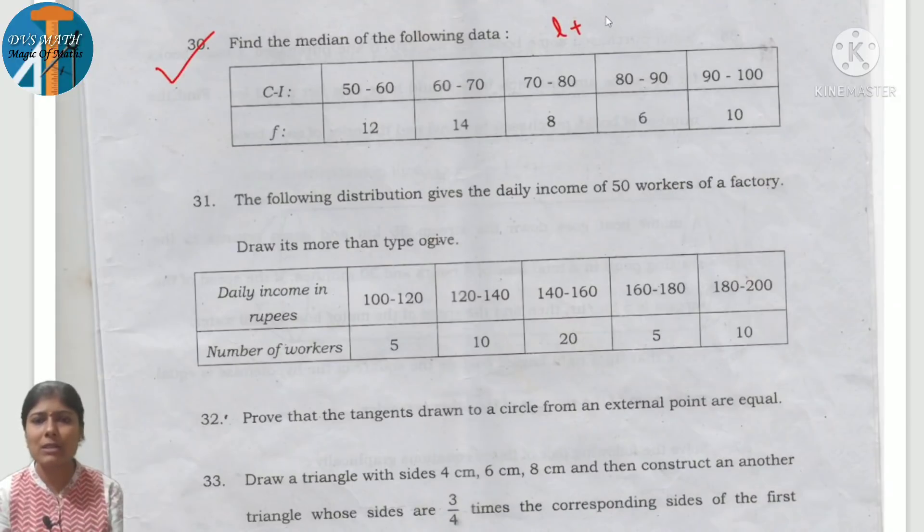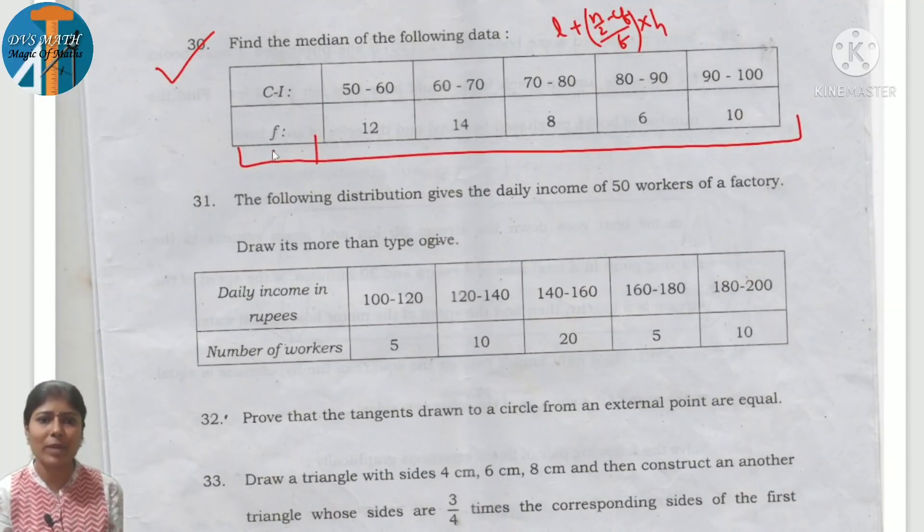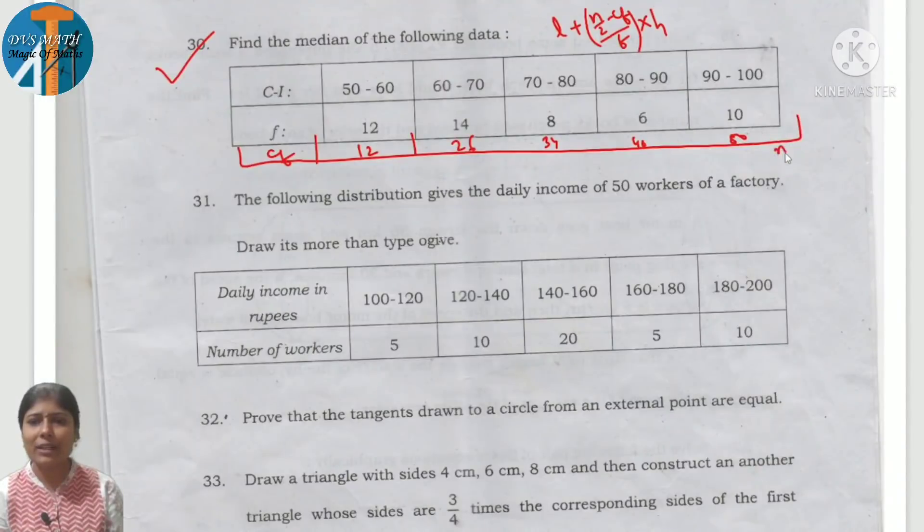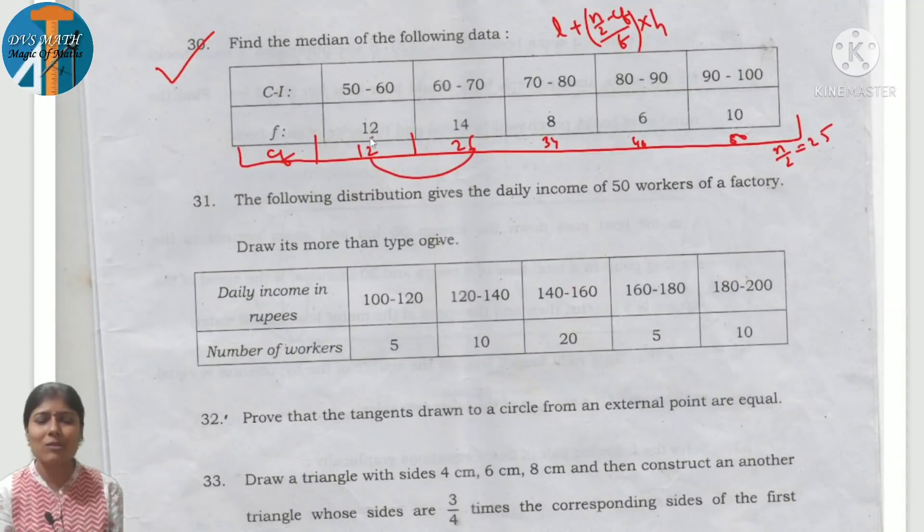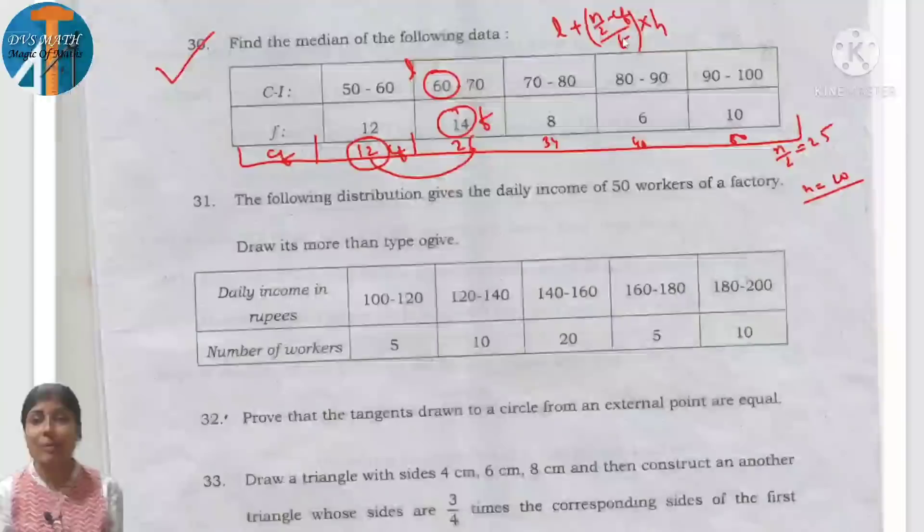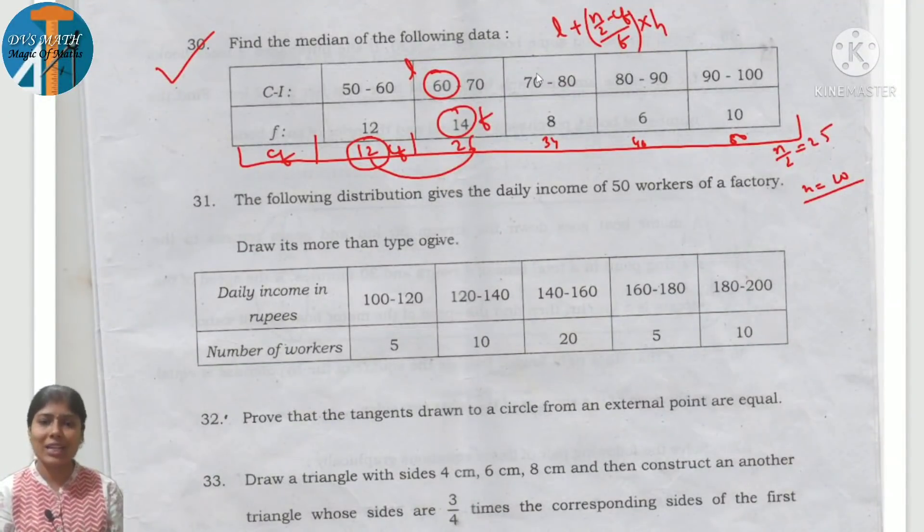Median: find out using the formula. Median formula is L plus (n by 2 minus Cf) by F into H. So you have to find Cf. Cf: write 12 as it is, 12 plus 14 is 26, 26 plus 8 is 34, 34 plus 6 is 40, 40 plus 10 is 50. So 50 is n, n by 2 is 25. 25 comes in this range: 12 to 26. So this will be Cf, this will be F, this is lower limit. Difference H is equal to 10. Subtraction, multiplication, division, addition.